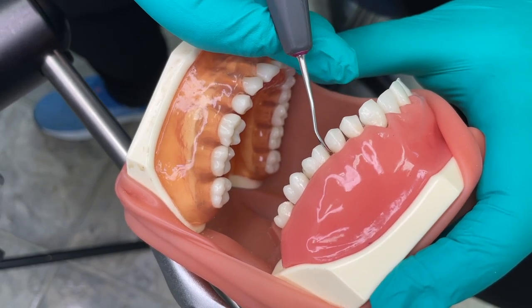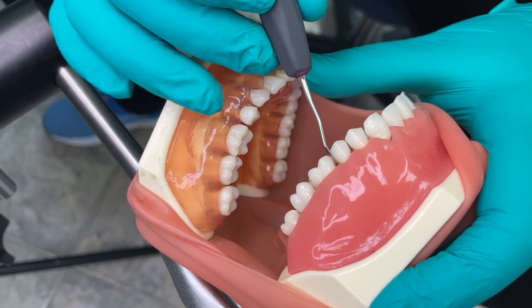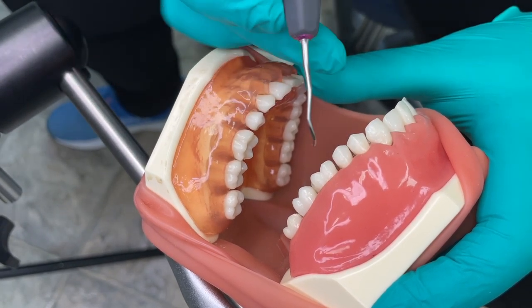For me to have the terminal shank parallel to the tooth with the Gracey, I'm going to have to do a cross arch fulcrum or extra oral fulcrum. There's no way I'm going to be able to fulcrum up here, especially if the patient has cheeks.